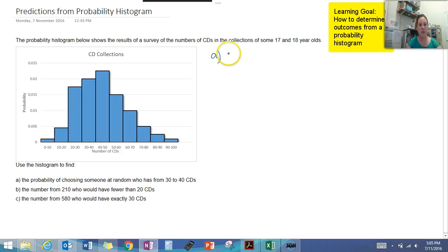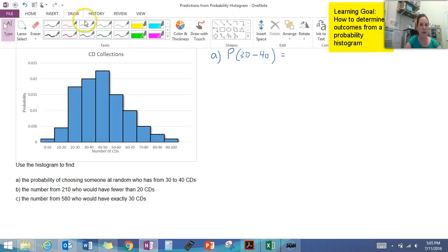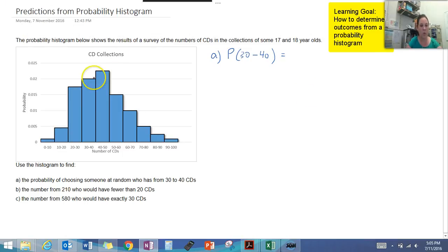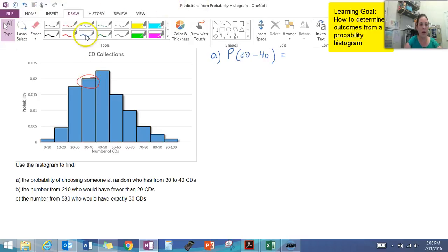The first step we need to do is work out what the probability is of having 30 to 40 CDs from our probability histogram. So we need to have a look at where 30 to 40 falls on our histogram. That's here, this bar. Now that we know that, we know what each individual unit is worth for our probability.